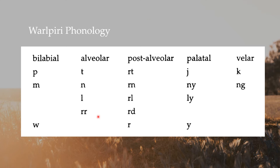Another feature is the R sounds — there are many, many R sounds. Warlpiri has three R sounds. The only language I know that has this particular R sound would be the languages of India. Hindi has words like this — the R in the word for 'big' is that kind of retroflex R sound.